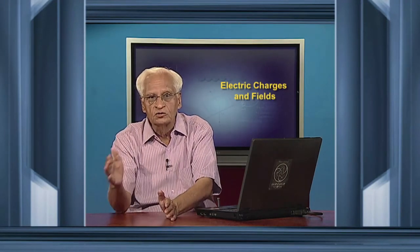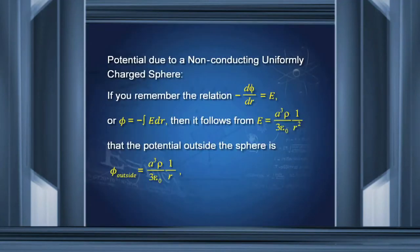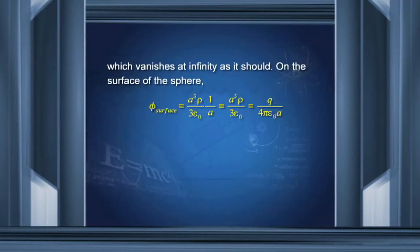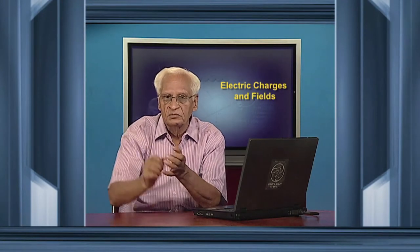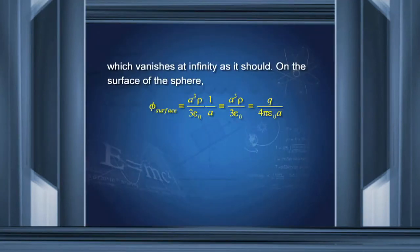Remember, for a point outside, the sphere acts as a point charge at the center. The potential vanishes at infinity. On the surface of the sphere, if I put r equal to A, φ_surface is A³ρ/3ε₀ into 1/A, which is A²ρ/3ε₀. If I substitute the value of ρ, I will get q/4πε₀A. So at a point distance A from the center, the potential is q/4πε₀A.